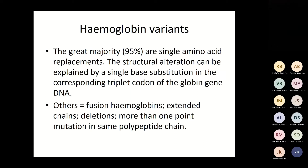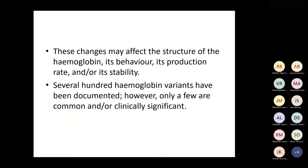The majority of variants are single amino acid replacements. We also get structural alterations explained by a single base substitution in the corresponding triplet coding of the globin gene DNA. Others can be fusions, deletions, or more than one point mutation in the same polypeptide chain. The changes we see may affect the haemoglobin's behaviour, production rate, or stability.